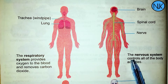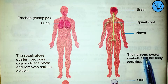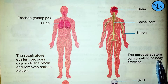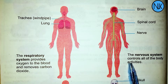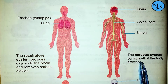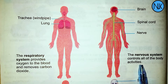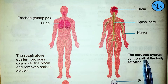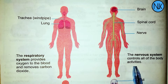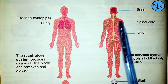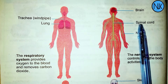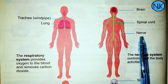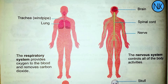The nervous system controls all of the body's activities. It includes the brain, spinal cord, and nerves throughout the body.